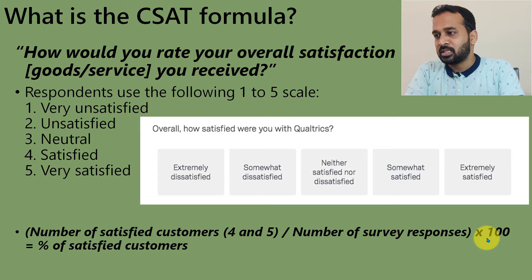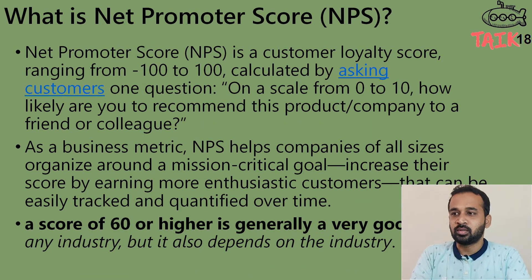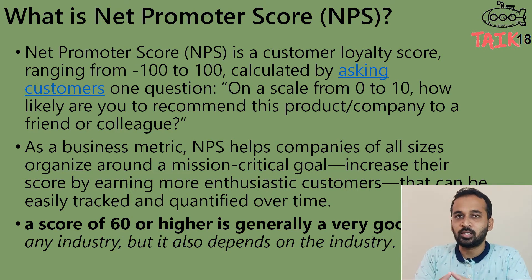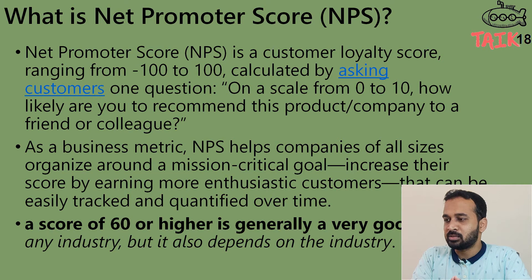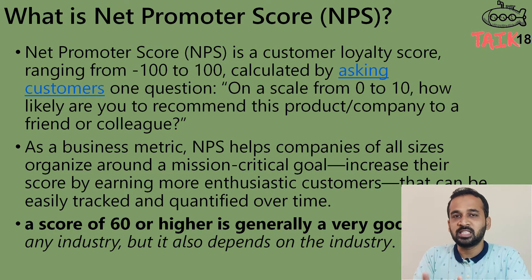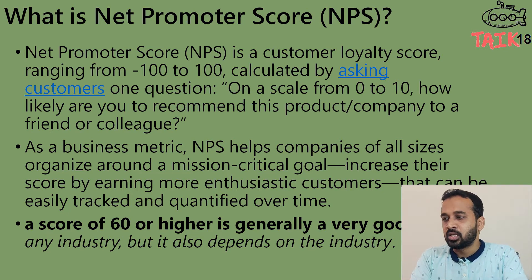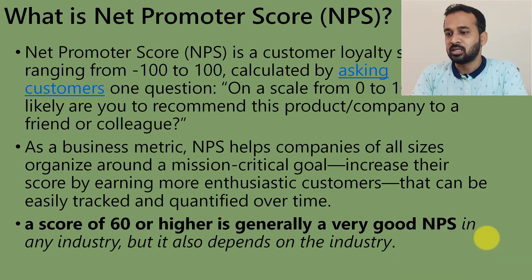Moving on to the next topic: what is a net promoter score, or NPS? The net promoter score is a customer loyalty score ranging from minus 100 to plus 100, calculated by asking customers one question on a scale of 0 to 10 — compared to 1 to 5 for C-SAT. The question is: how likely are you to recommend this product or company to your friend or colleague? As a business metric, NPS helps companies of all sizes organize around mission-critical goals and increase their score by earning more enthusiastic customers that can be tracked and quantified over time.